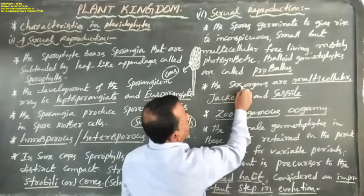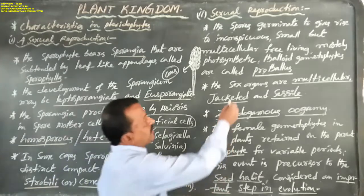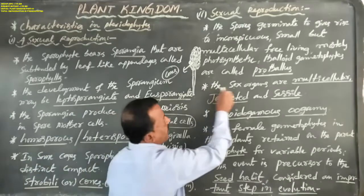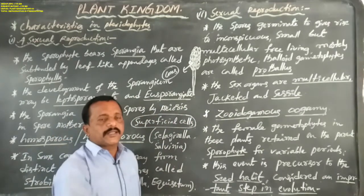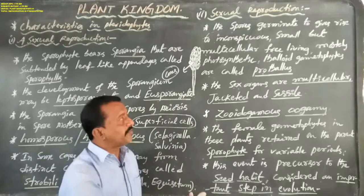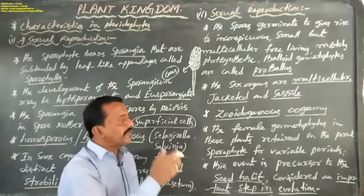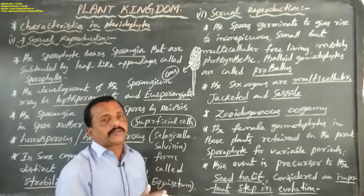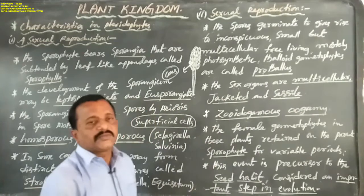The prothallus bears sex organs. In bryophytes, the sex organs are multicellular, jacketed, and stalked. But here in pteridophytes, the sex organs are multicellular and jacketed but sessile — meaning the stalk is absent.